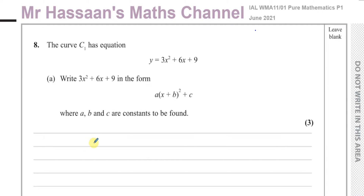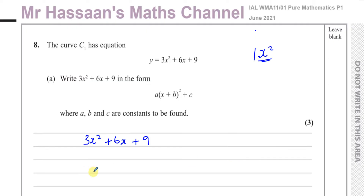We have a quadratic equation and we want to write it in completed square form. To complete the square, we need the x squared term to have a coefficient of 1. So what we need to do is take out the 3 and put it in a bracket outside. We're not taking it out because it's a factor — we're taking it out because we want the expression inside to say x squared.